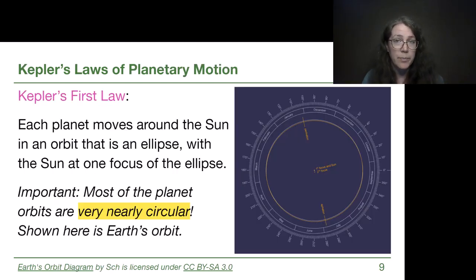Kepler's first law states that each planet moves around the sun in an orbit that is an ellipse with the sun at one focus of the ellipse.